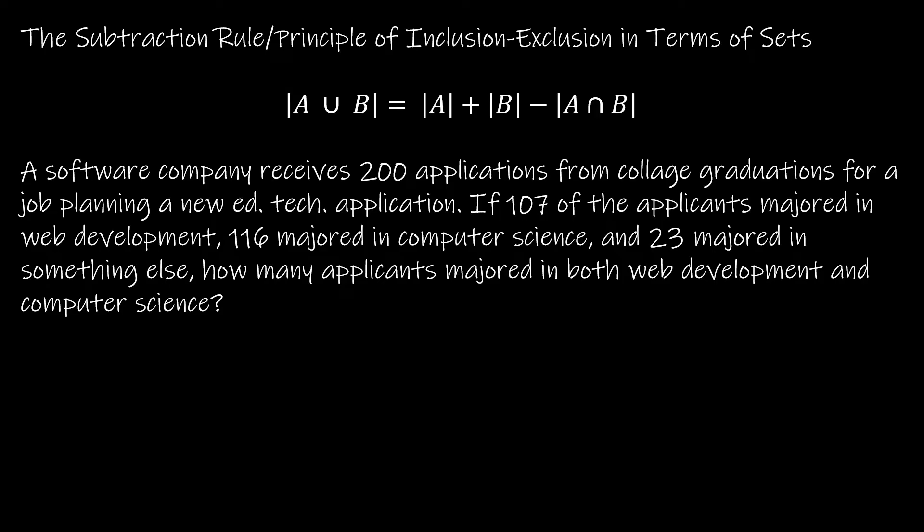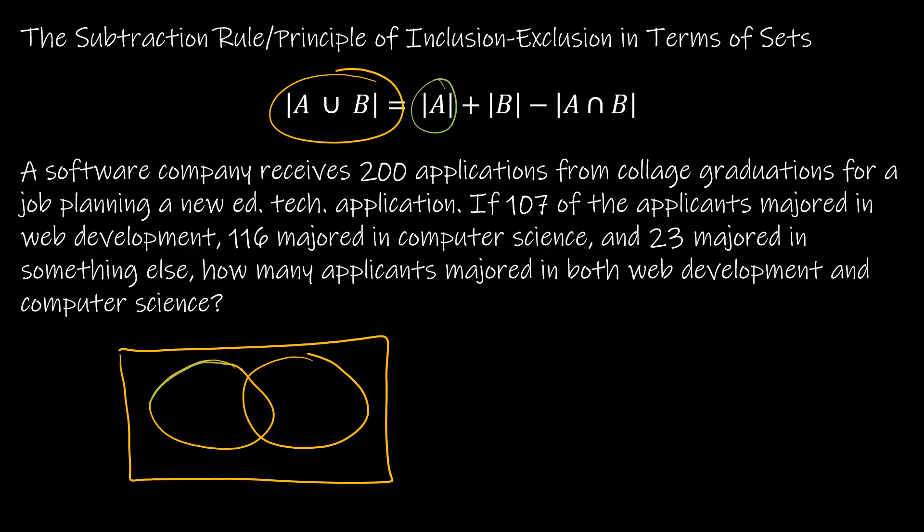Let's formalize this subtraction rule before looking at another example together. So the subtraction rule again says A union B, the cardinality or the number of elements in A union B is equal to the number of elements in A plus the number of elements in B, subtracting that intersection just one time.